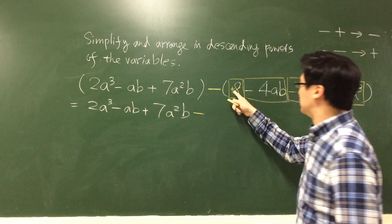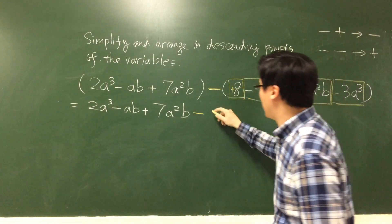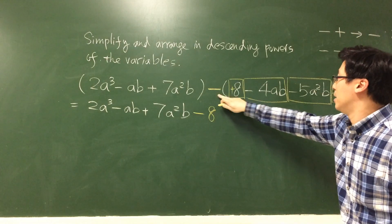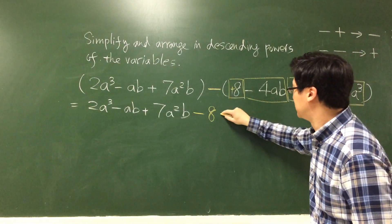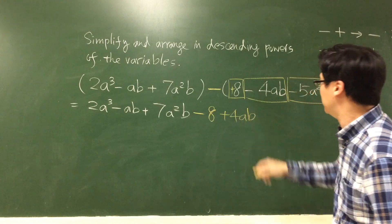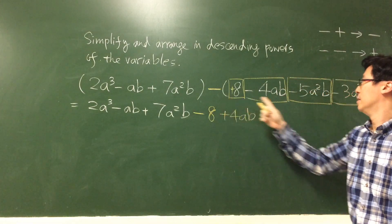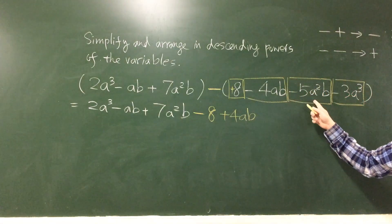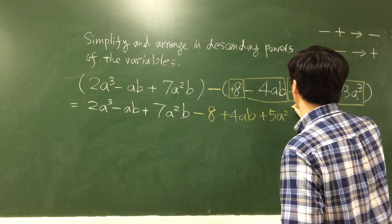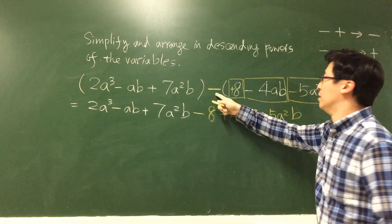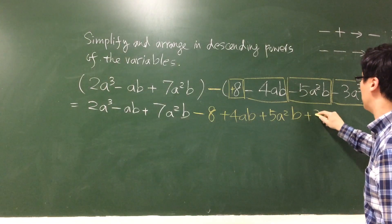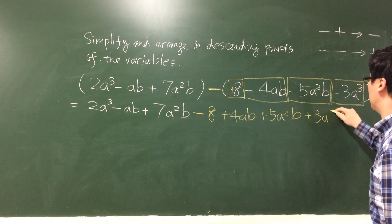So this is positive A, minus positive A, negative A. Minus negative 4ab — same sign — plus 4ab. Minus negative 5a squared b, plus 5a squared b. Minus negative 3a cubed, plus 3a cubed.